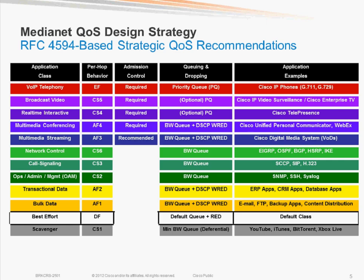I'm going to move on to the next section: MediaNet Campus QoS design. How do we now implement the strategy we've come up with — the number of classes, how everything is going to be marked — and apply that in our campus? The first question that really has to be addressed, and some administrators still struggle with it, is: do I really need QoS in my campus? I'm so over-provisioned and underutilized that if I look at my statistics on a multi-second basis, I see that I'm using a fraction of my capacity for the most part.